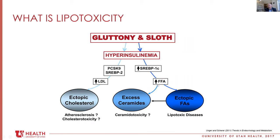This slide summarizes how lipotoxic disease happens — written by Roger Unger and Philip Sherer. We don't move enough, we start to overproduce insulin, glucose levels are high in the blood all the time. Glucose gets converted to fat producing LDLs, which contribute to cholesterol deposition and plaques. Then there's another arm that produces other fats harmful to other tissues. That's the concept of lipotoxicity — basically just fat being in the wrong place.